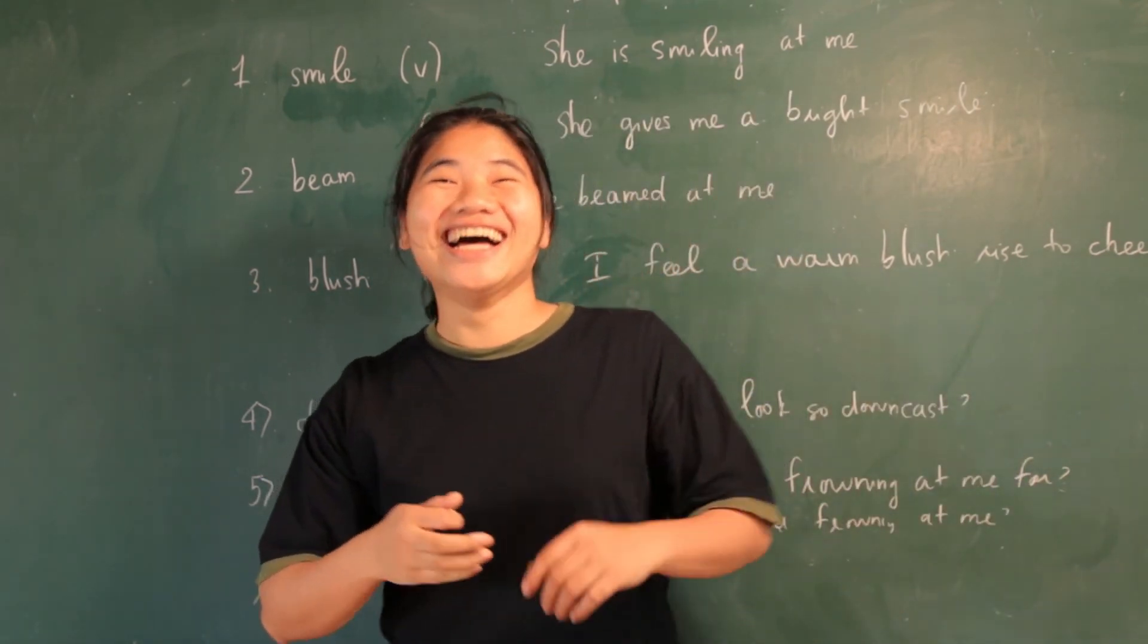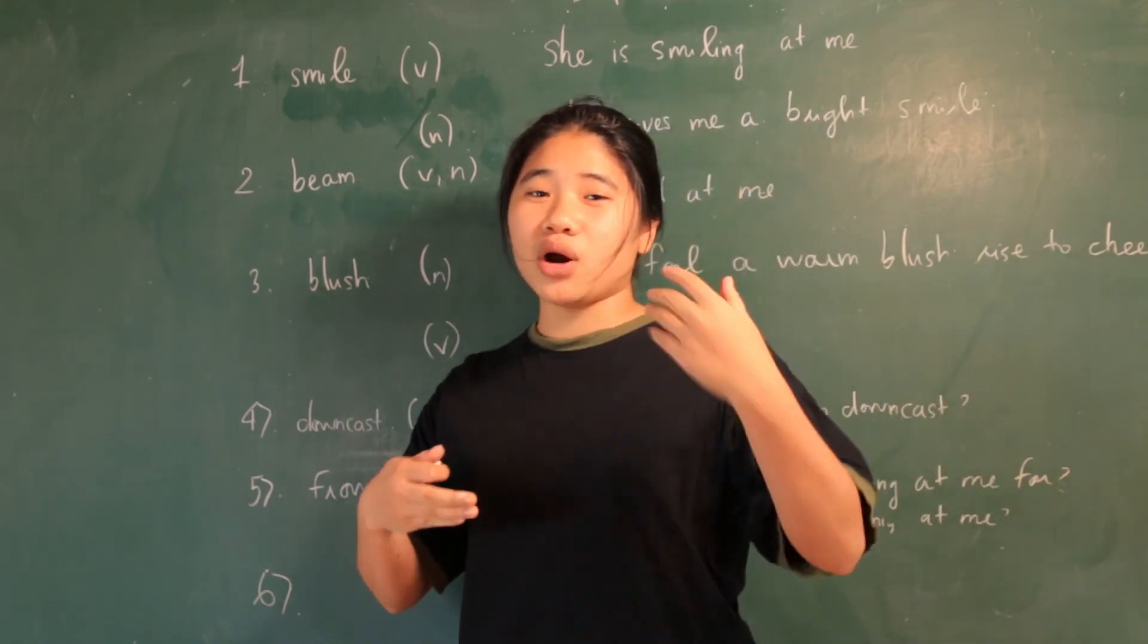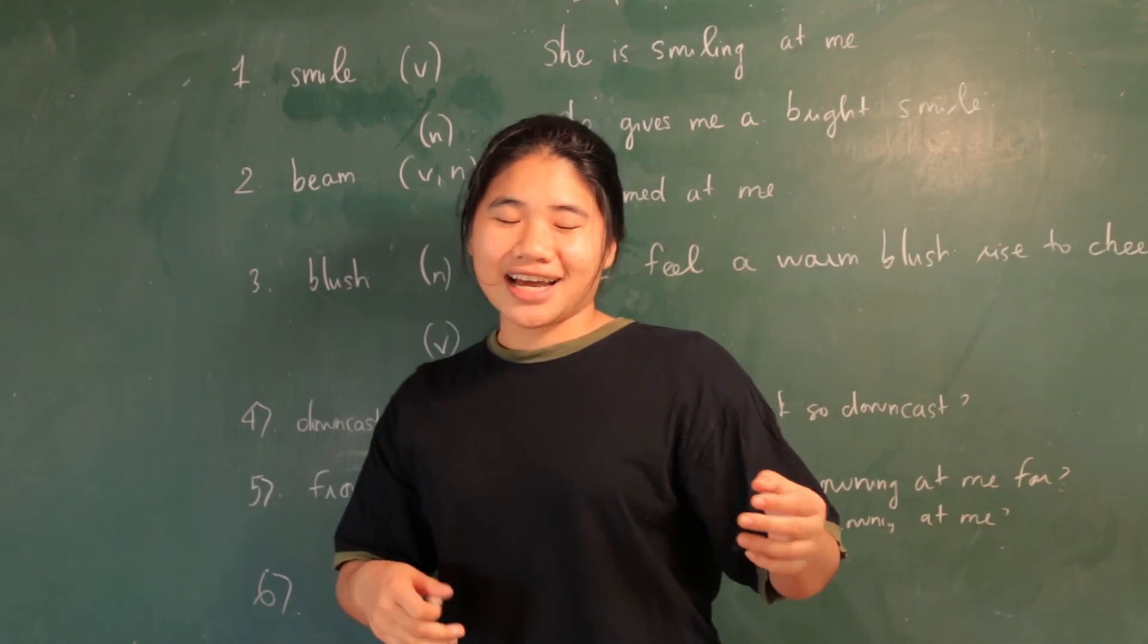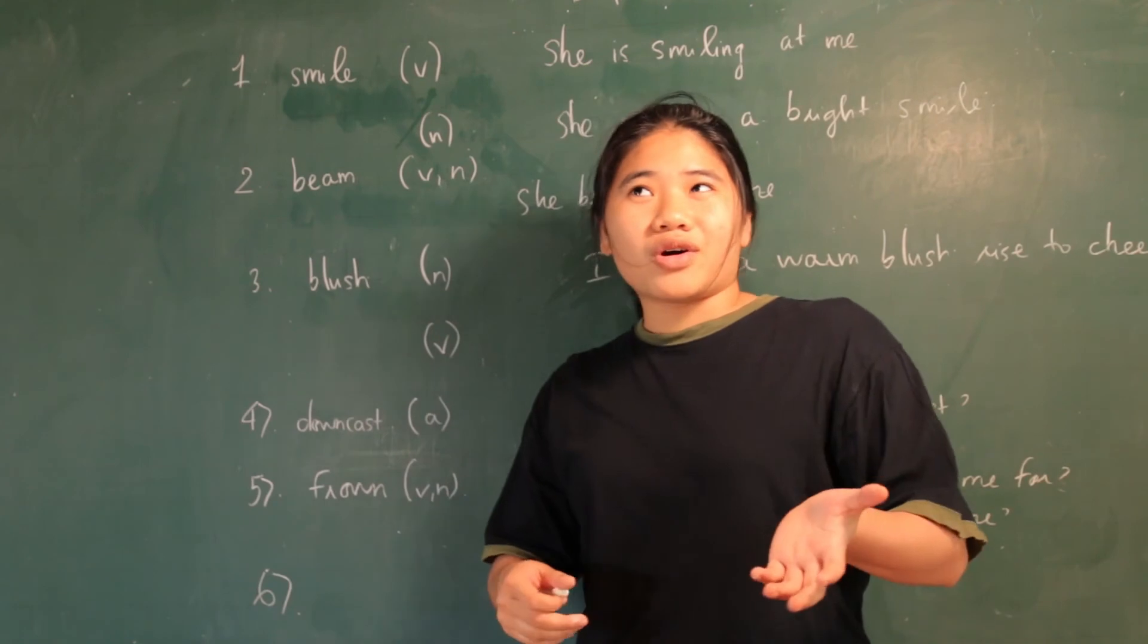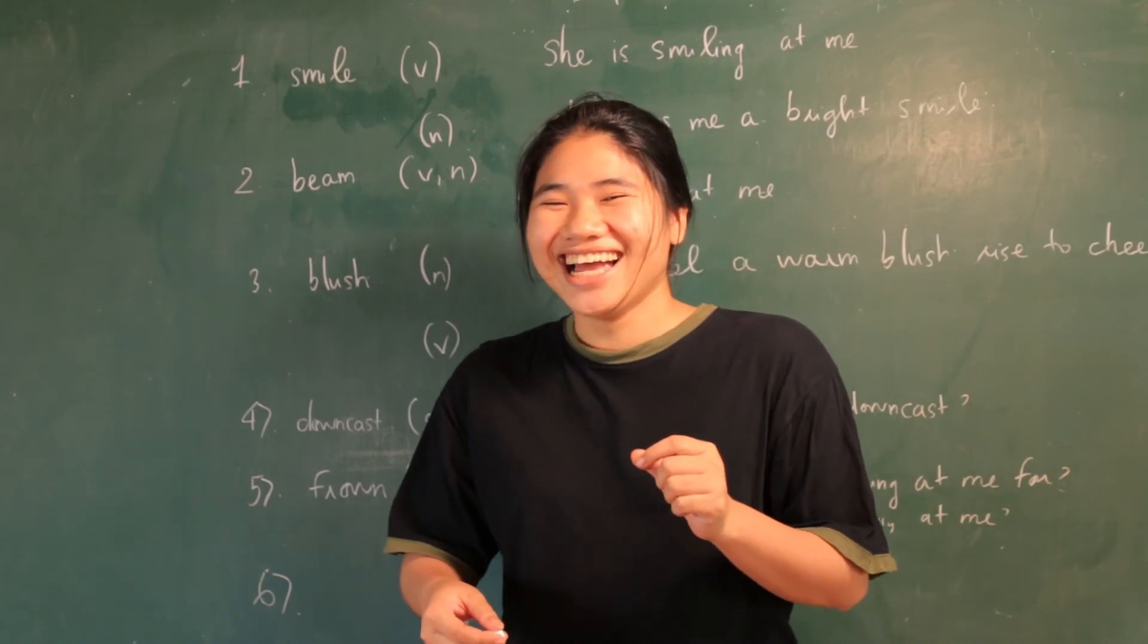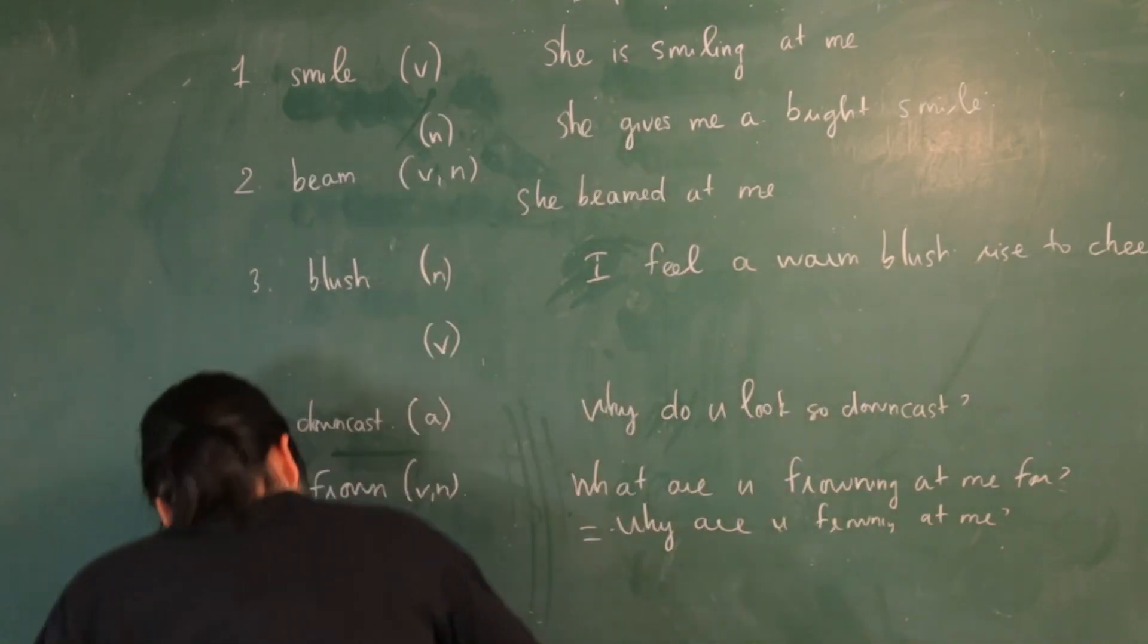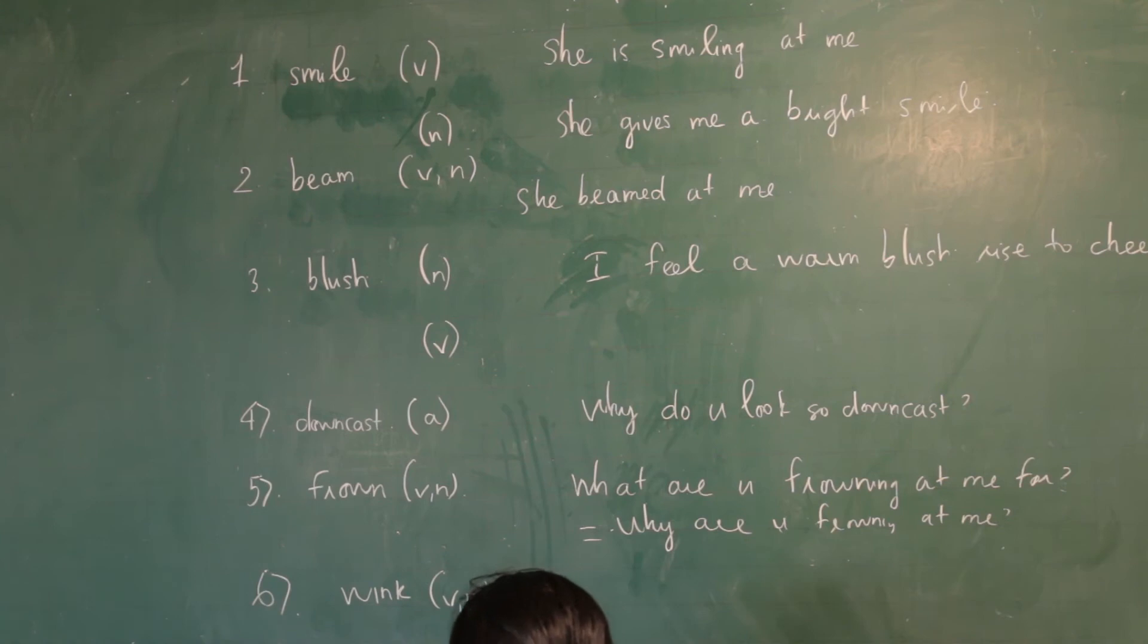And the next expression is used regularly by Mike, it's wink. You close one of your eyes and you open it again quickly, especially as a private signal to somebody or to show somebody that something is a joke. Wink is both verb and noun, but I just give examples as it is a verb. Like, Mike winks at a beautiful girl.